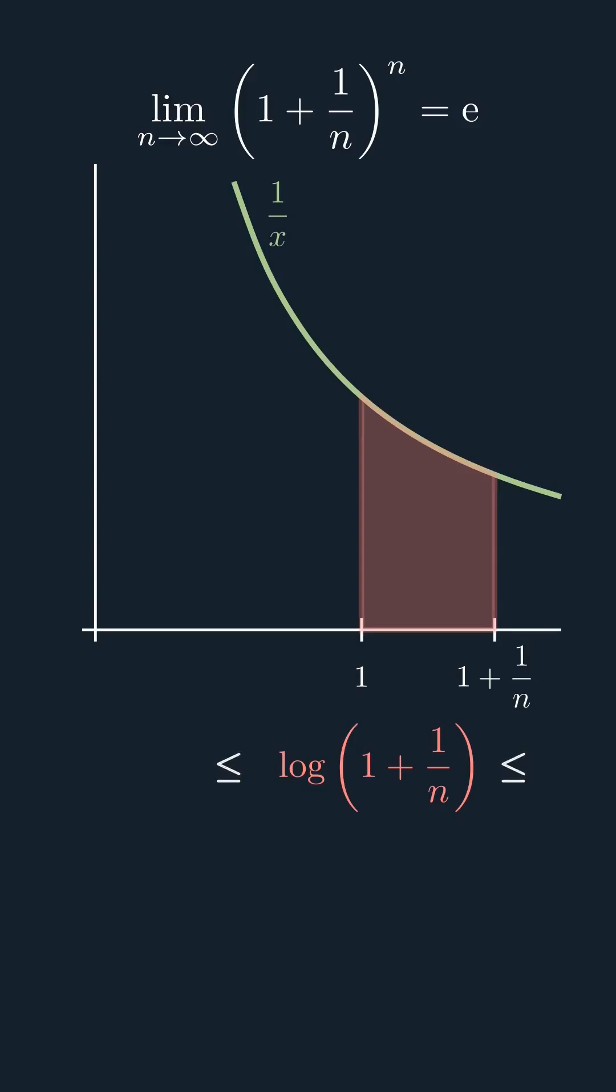We would like to find lower and upper bounds for this. Observe that the integral is completely contained in the following rectangle of height 1 and length 1 over n, meaning that the logarithm is less than 1 over n.